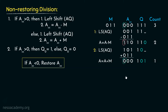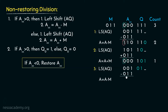During the third iteration, we check the content of the accumulator — it is positive. When it is positive, we perform the left shift first, giving the shifted result, and then perform the subtraction. This is similar to the first case, so the result is 110 again. Since it is negative, Q0 is set to 0. With this, the count becomes 0.